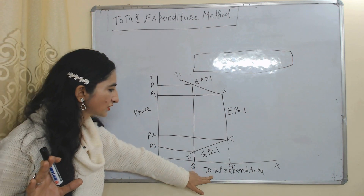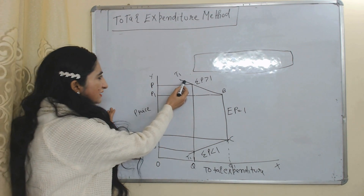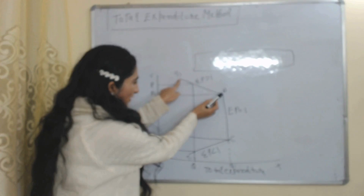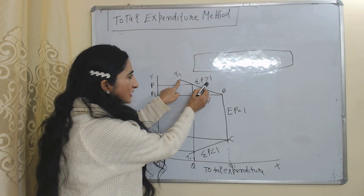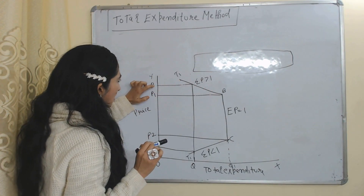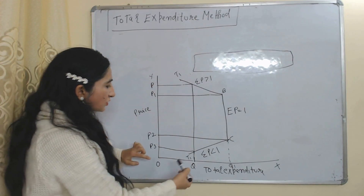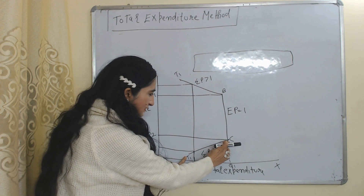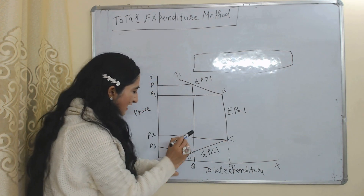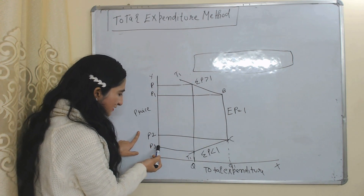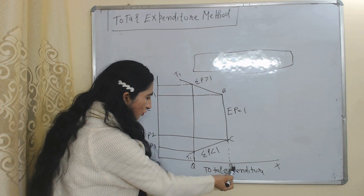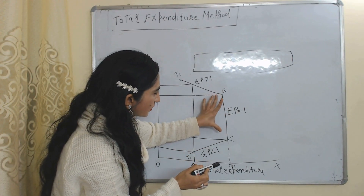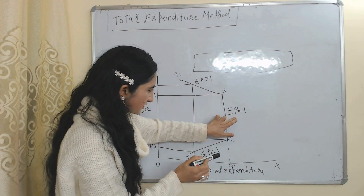Now with the help of a diagram we will understand total expenditure and all three types of elasticity of demand. On the X-axis we have total expenditure and on the Y-axis we have price. This T1 curve represents our total expenditure. The upper part of this curve represents elasticity of demand greater than 1 — when price falls from P2 to P1, total expenditure increases from Q2 to Q1. The lower part represents elasticity less than 1 — when price falls from P2 to P3, total expenditure also falls from Q1 to Q2. The BC part represents price elasticity equal to 1, where change in price does not affect total expenditure.